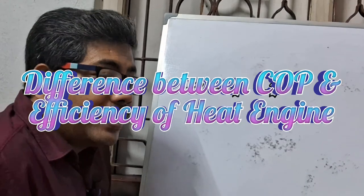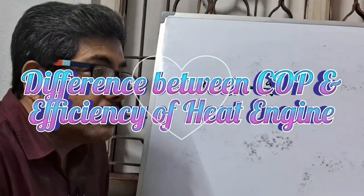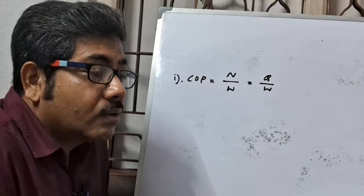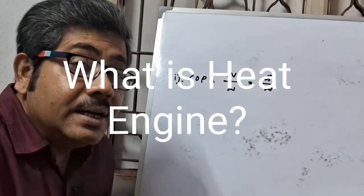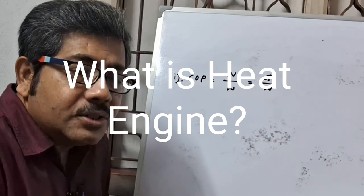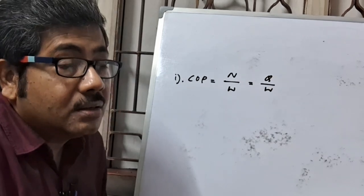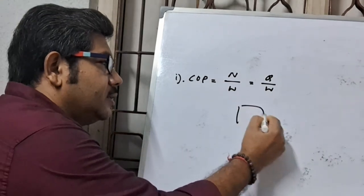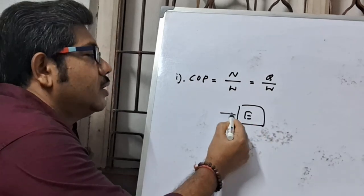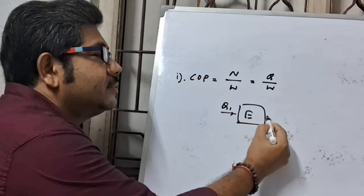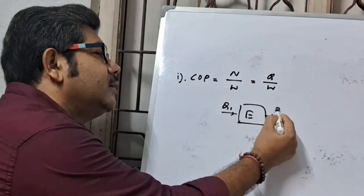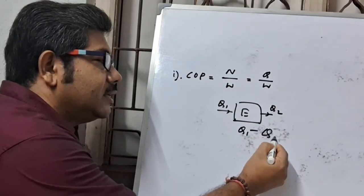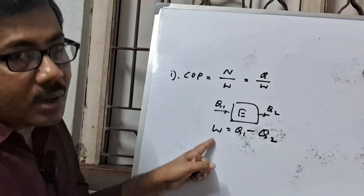Second question: what is the difference between COP and efficiency? Efficiency of a heat engine — first, what is a heat engine? A heat engine is a device in which heat energy is converted into mechanical work in a cyclic process. Here, Q1 heat is supplied and Q2 heat is rejected. That means heat utilized is Q1 minus Q2, which is work done.